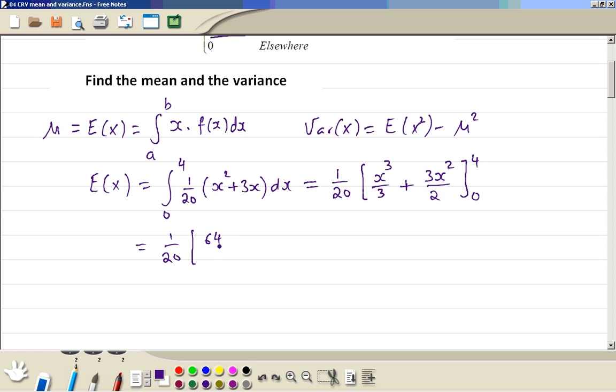Now we substitute the limits. First we substitute the upper limit of 4 cubed divided by 3. Here, 4 squared which is 16 divided by 2 is 8, 8 times 3 is 24, and the lower limit will give us 0. So if we simplify the bracket, this can be 3 times 24 which is 72, 72 plus 64, so that's 136, and it's divided by 3. We can simplify this to be 34 divided by 15, which is equal to 2.27.